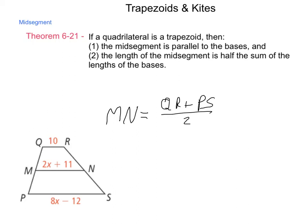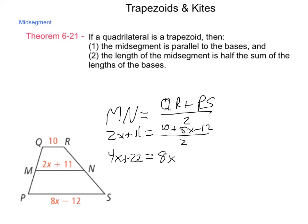Using substitution, 2x + 11 equals (10 + 8x − 12) divided by 2. To solve, I'll use the multiplication property of equality and multiply both sides by 2, giving 4x + 22 equals — combining like terms on the right-hand side — 8x − 2.